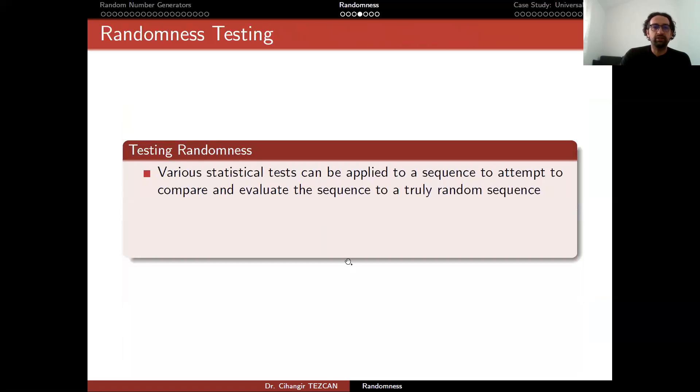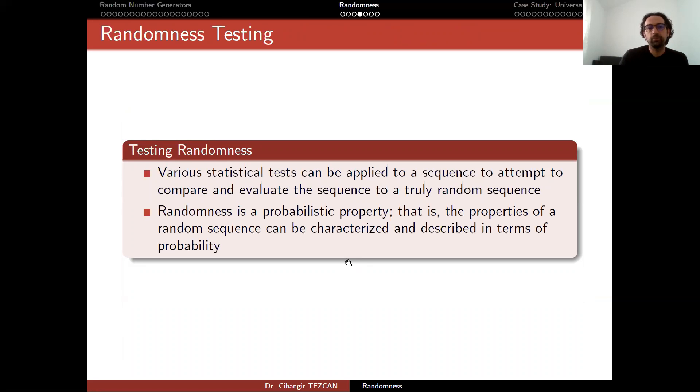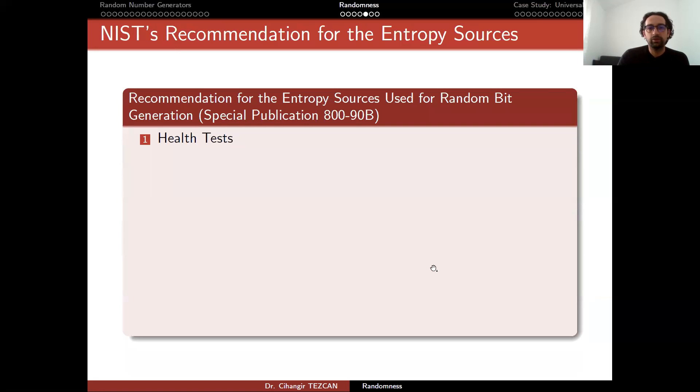So how do we test randomness? Various statistical tests can be applied to a sequence to attempt to compare and evaluate the sequence to a truly random sequence. Randomness is a probabilistic property. That is, the properties of a random sequence can be characterized and described in terms of probability.